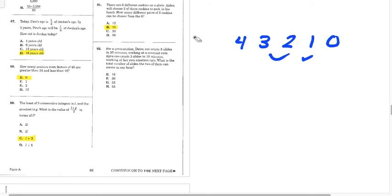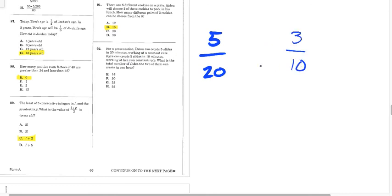Alright, 92. He creates five slides in 20 minutes, and Kyra can make three slides in 10 minutes. They want to know how much they can make in one hour. So, over 60 and over 60. This is times 6, this will be 18. This is times 3, 15. 18 plus 15 is 33. So, 92, we have G.